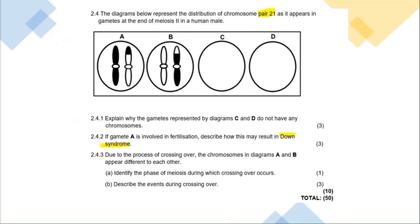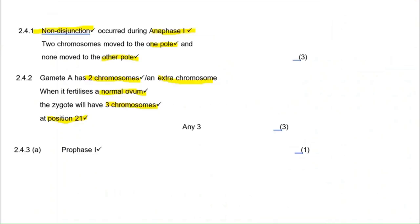Question 2.4.3 asks: due to the process of crossing over, the chromosomes in diagrams A and B appear different from each other. Part A asks you to identify the phase of meiosis during which crossing over occurs. Remember you must state the specific phase — metaphase 1, metaphase 2, anaphase 1 — you can't just say 'anaphase.' The answer is prophase 1. This is very important: you must state prophase 1, not just prophase.